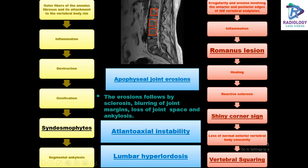There are irregularities and erosions involving the anterior and posterior edges of the vertebral end plates, resulting in inflammation appearing as Romanus lesions on MRI. The healing process and reactive sclerosis appears as the shiny corner sign, and loss of the normal anterior vertebral body concavity results in vertebral squaring.